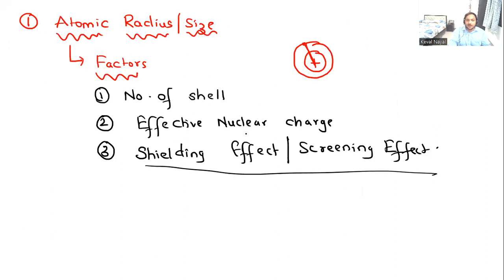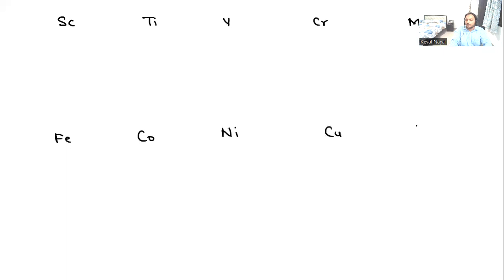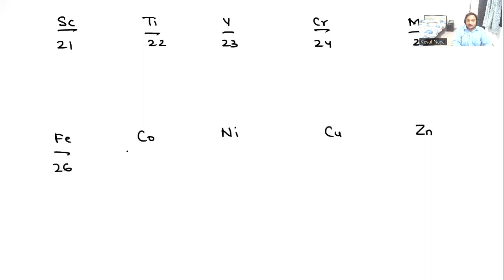The best example of shielding is in d-block elements. Take the 3d series: scandium, titanium, vanadium, chromium, manganese, iron, cobalt, nickel, copper, zinc. Scandium has 21 protons, titanium 22, vanadium 23, chromium 24, manganese 25, iron 26, cobalt 27, nickel 28, copper 29, zinc 30.